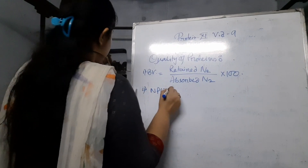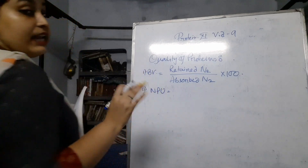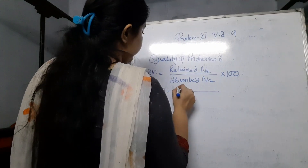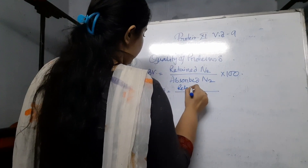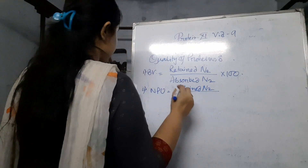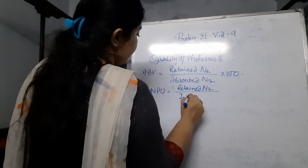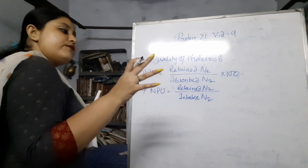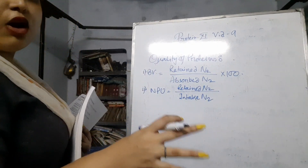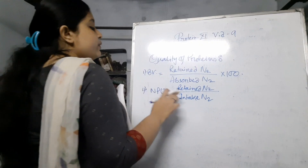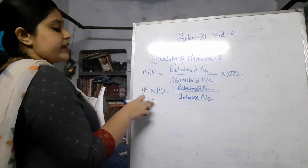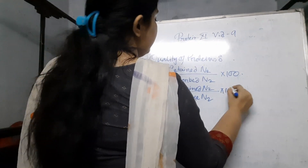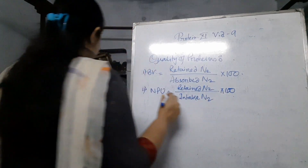Then NPU — net protein utilization. What is NPU? It is also retained nitrogen by intake nitrogen. Here you can see the absorbed part: after intake, some part only can be absorbed — not all. So here you can understand that BV is more accurate than NPU. It is retained nitrogen by intake of nitrogen, into 100.